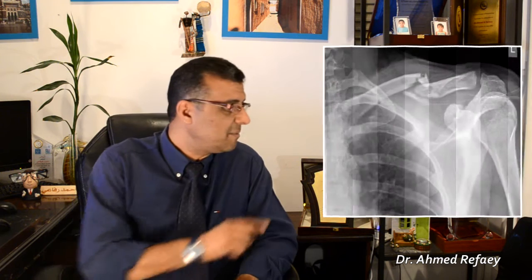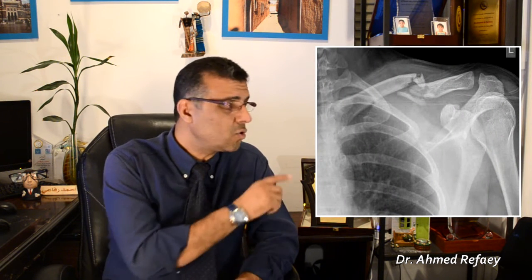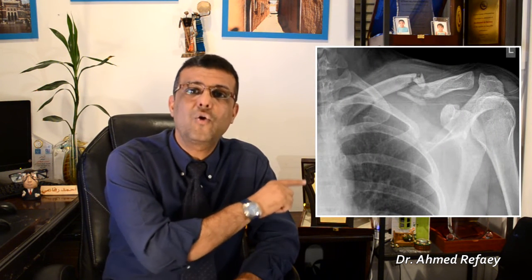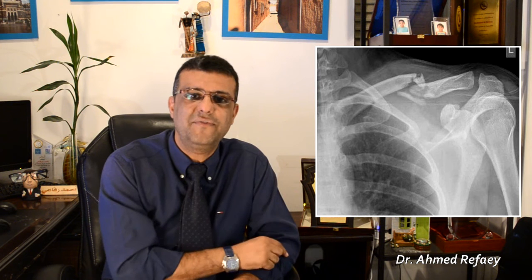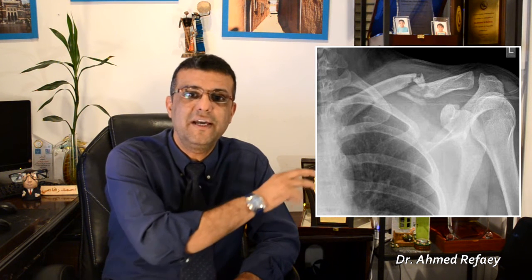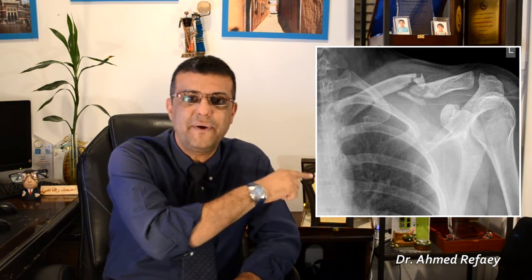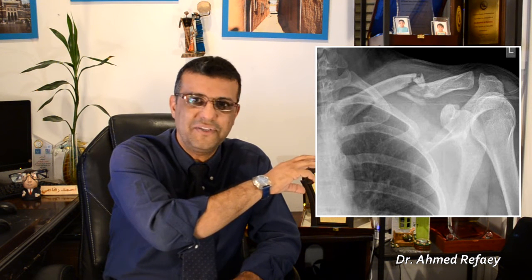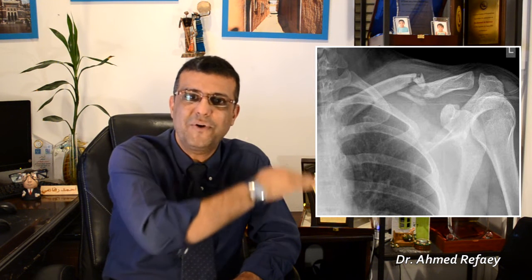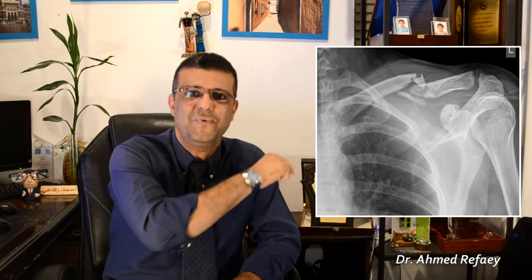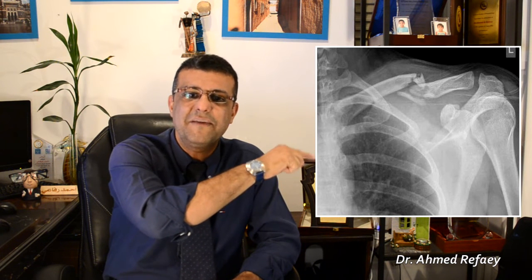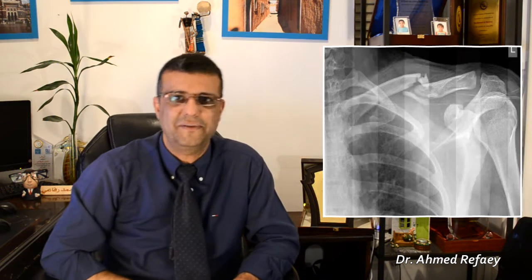Case number four. This is a complete, comminuted fracture of the mid-shaft of the left capital, associated with some shortening as there is overlap of the fractured ends. There is also downward displacement, because we describe the displacement of the distal bone fragment — and here the distal bone fragment is displaced downward.